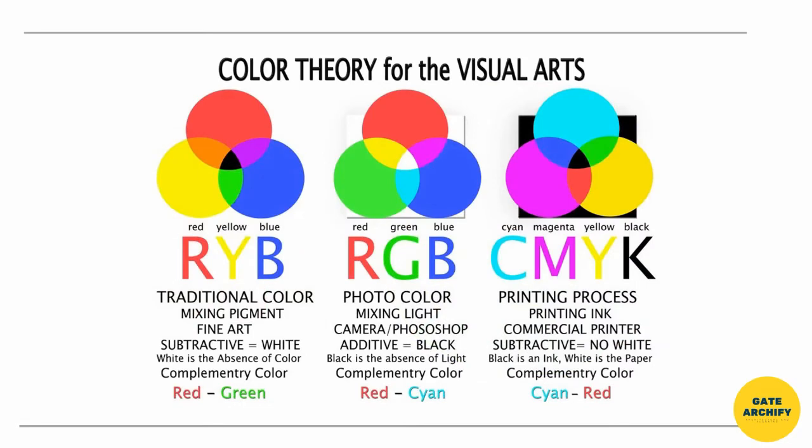RGB is considered the primary colors of light. RYB is the primary colors of paint or pigments. CMYK is used for printing. RGB is an additive color system, while RYB and CMYK are based on subtractive color systems.